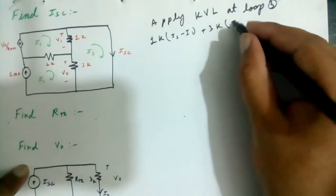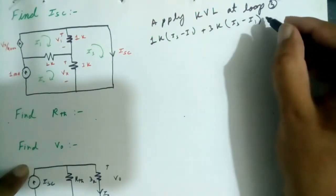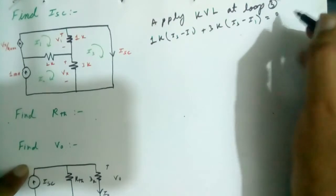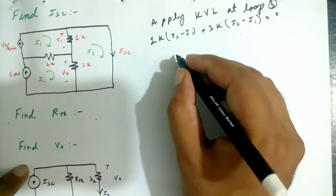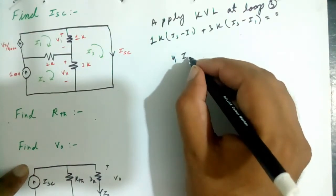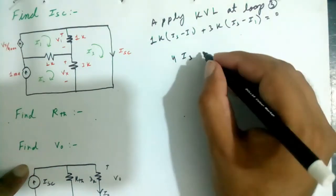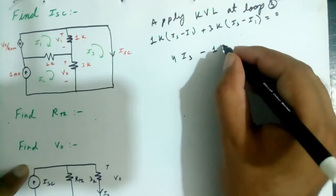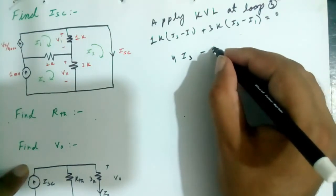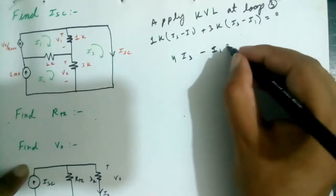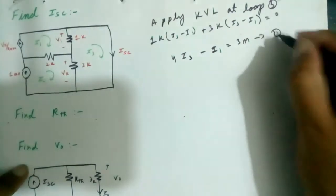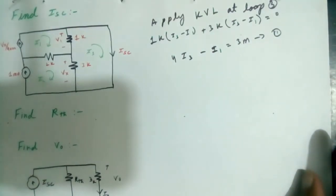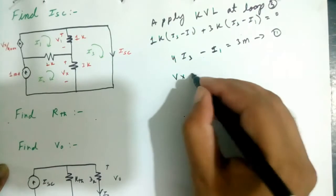I1 is equal to 0. By simplifying this equation: 4·I3 minus I1 is equal to 3mA — this is equation 1.